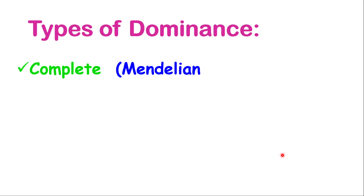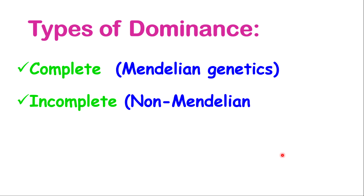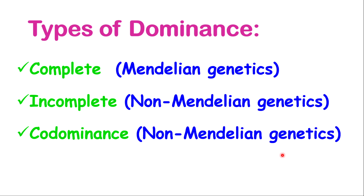Complete dominance is described as Mendelian genetics, which means that it follows a certain pattern of segregation. It also explains that the offspring will exhibit the trait of one of the parents, and it assumes the offspring must be one of two possibilities — either the dominant or the recessive trait. Incomplete and co-dominance are described as non-Mendelian genetics, which means the offspring can exhibit traits that were not seen in their parents.